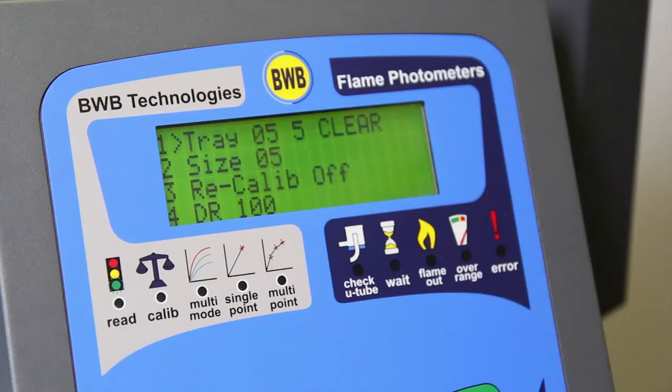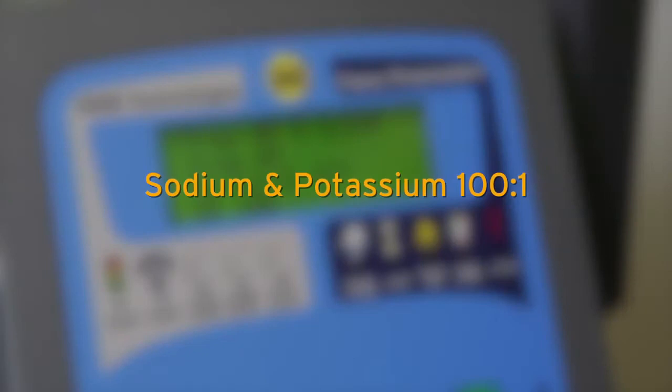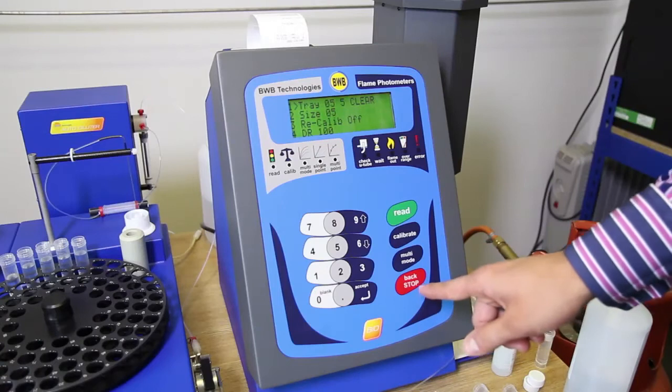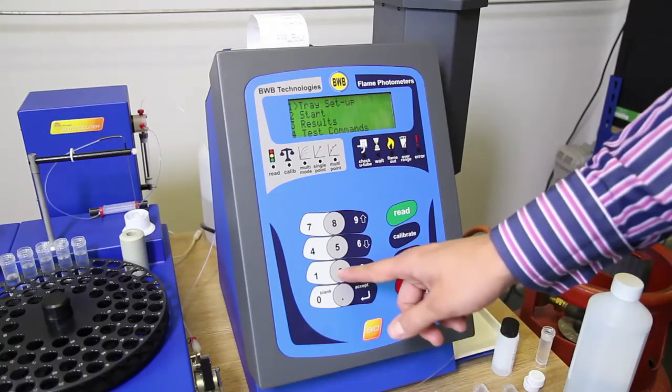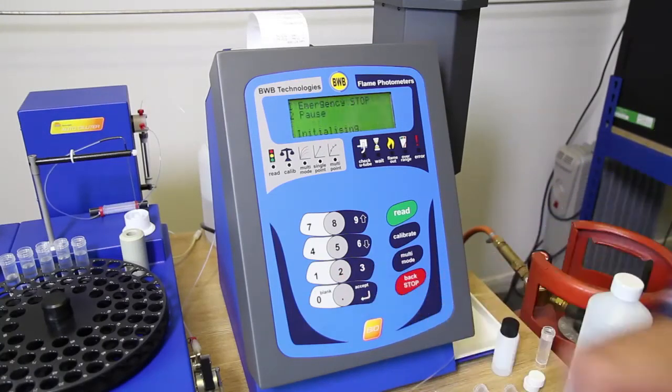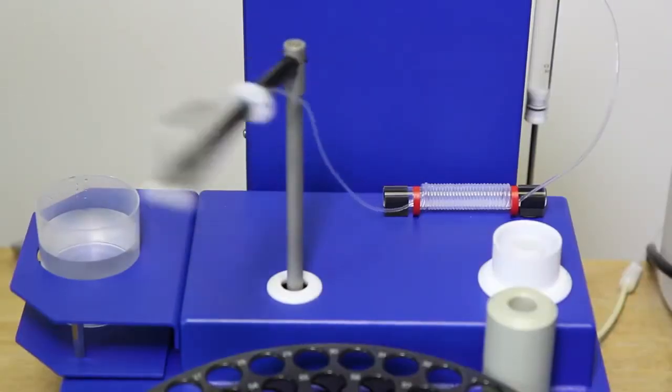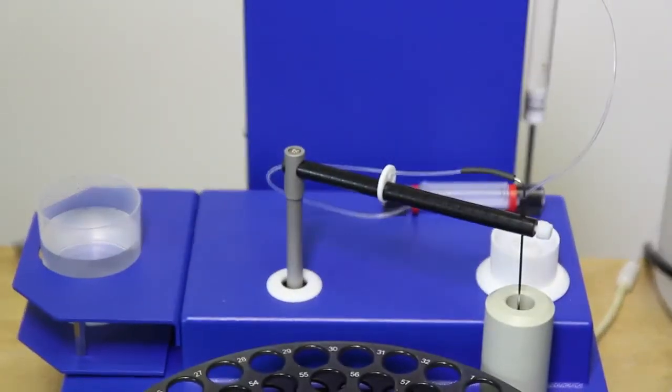Option 4 allows you to view the automatically set dilution ratio. Sodium and potassium have a dilution ratio of 100 to 1, whereas lithium and calcium have a dilution ratio of 10 to 1. The previous results can be erased using clear. When the tray details have been entered, press back and select start to commence the test run, but make sure there is sufficient diluent in the reservoir first.